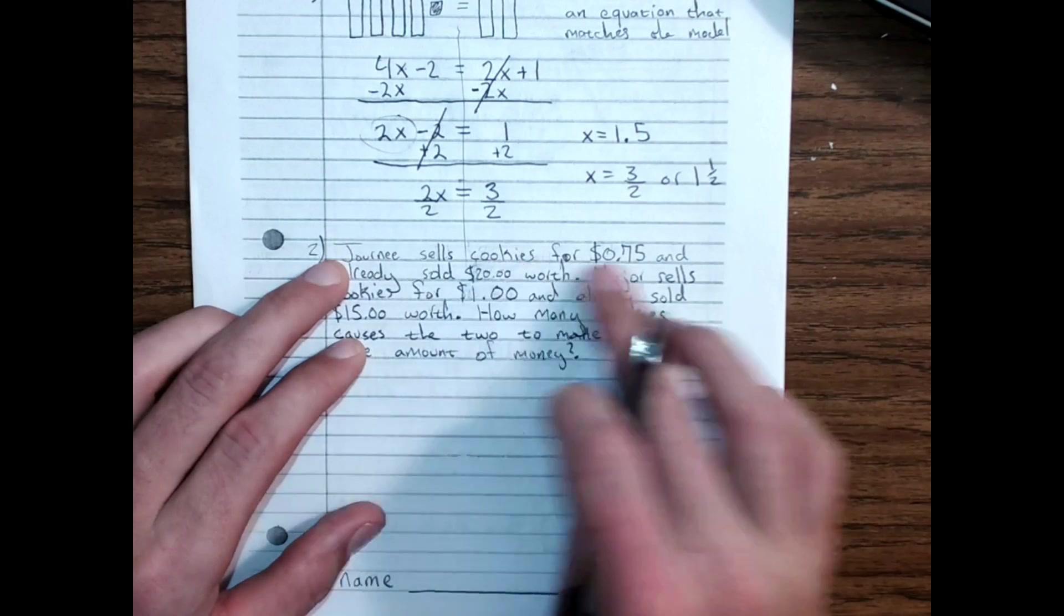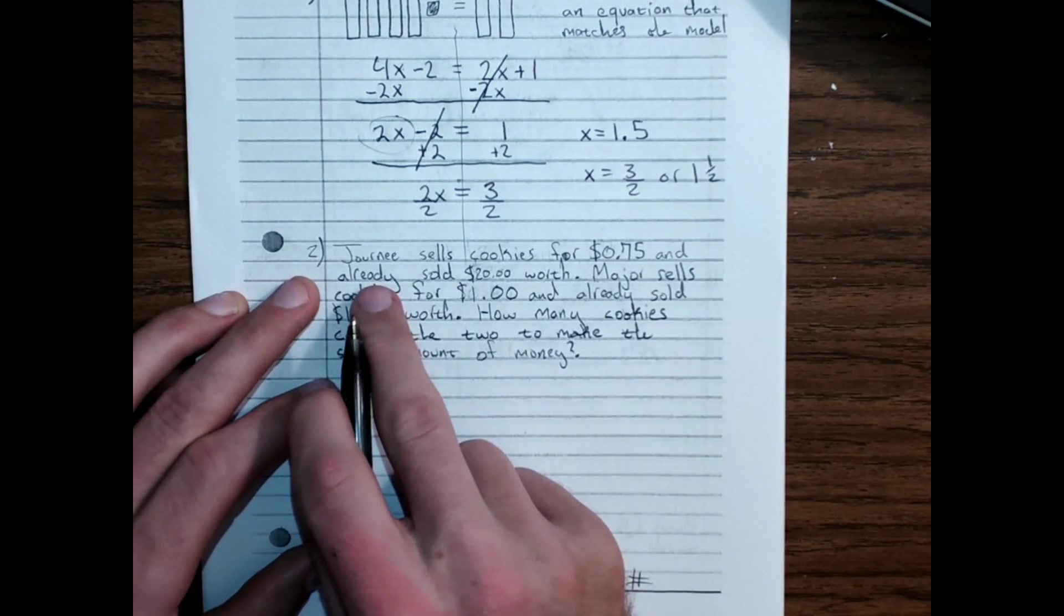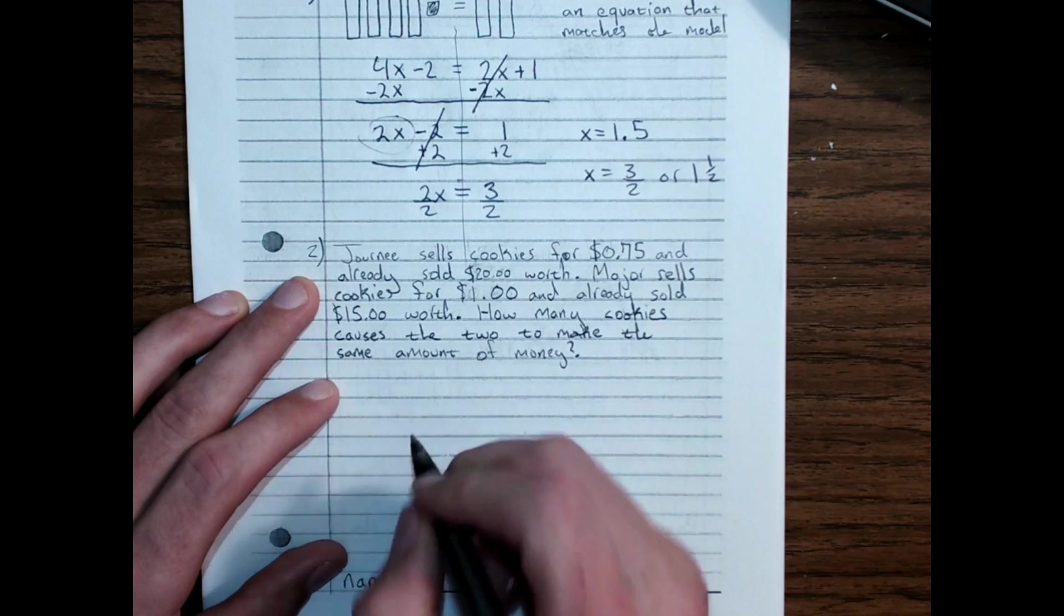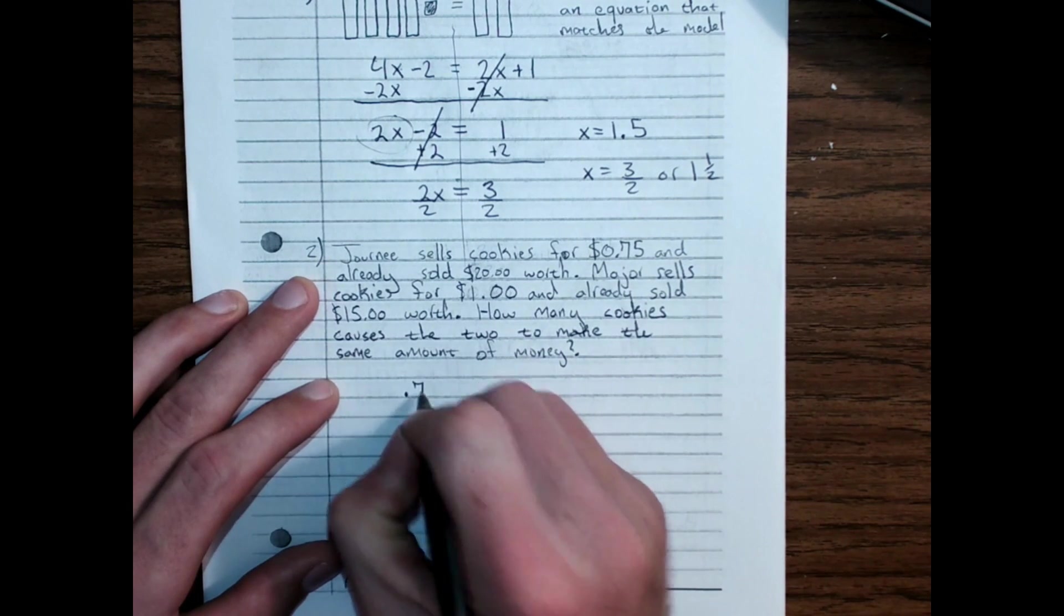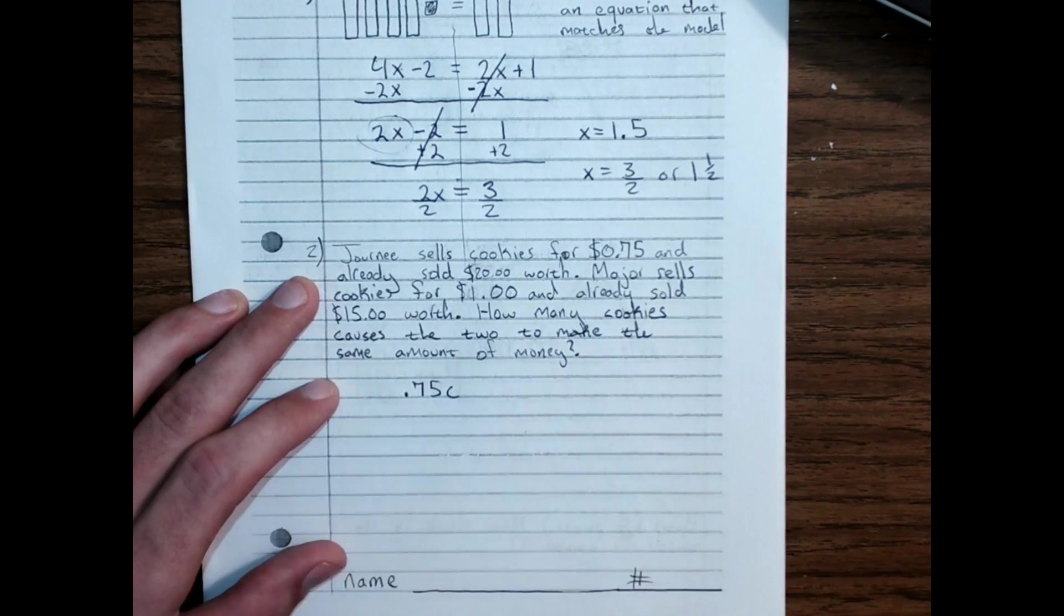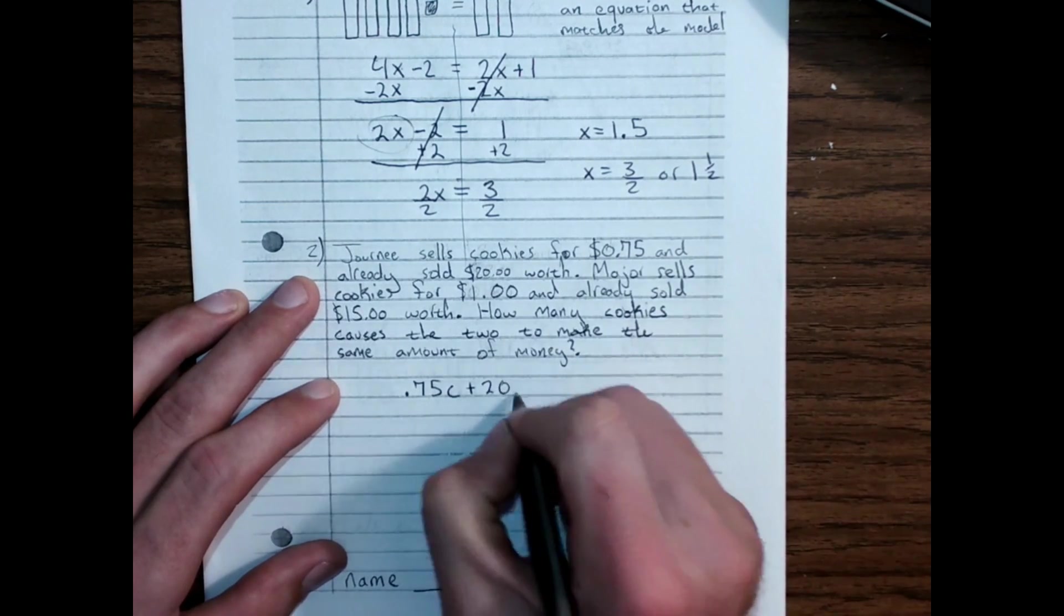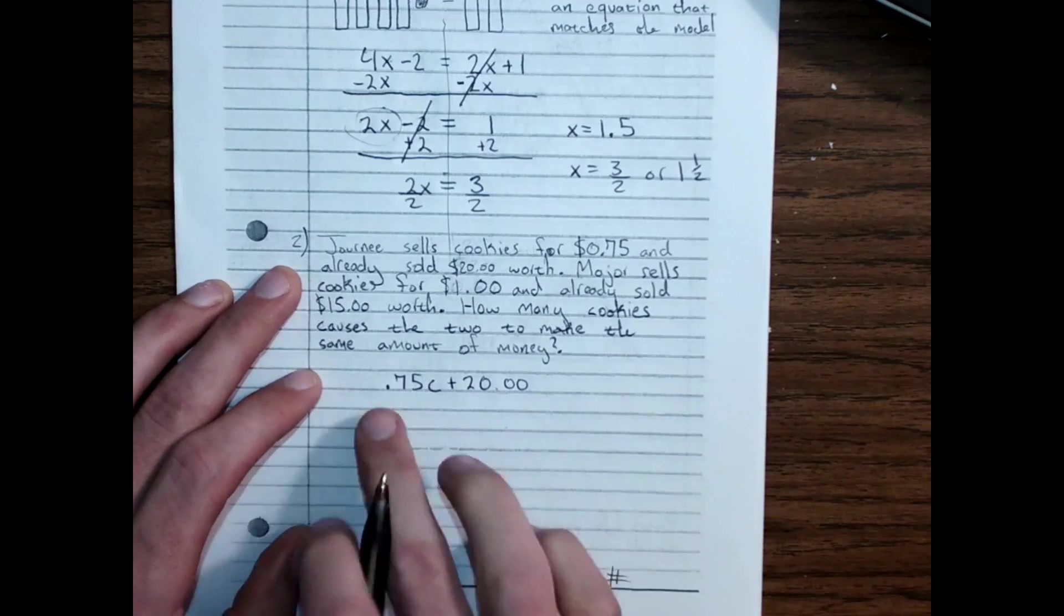Here we've got Journey selling cookies for 75 cents, and she already sold $20 worth. So, 0.75 times each cookie, plus $20, tells us how much Journey's has.